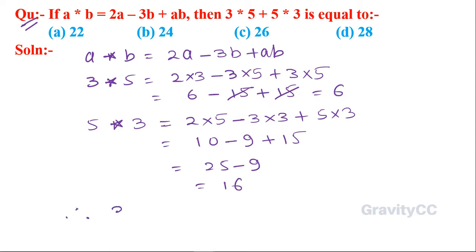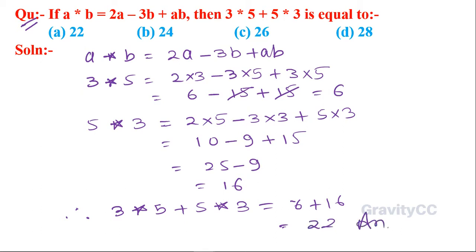Therefore 3 asterisk 5 plus 5 asterisk 3 is equal to 6 plus 16, which is 22. So option A is the correct answer.